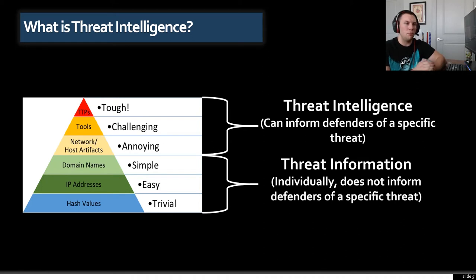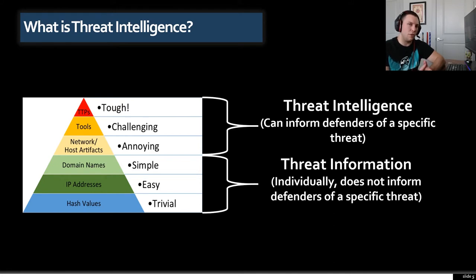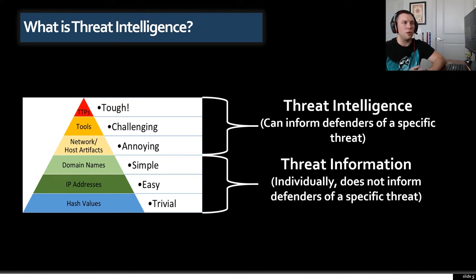If we look at this in terms of the pyramid of pain, most times when we're talking about threat intelligence we're talking about the lower three tiers. I'm not saying threat information is not useful or important — it is. I'm just trying to show that there is a very clear line between threat information and threat intelligence. Threat information individually doesn't inform defenders of anything specific. Once you start adding context, enriching that data, and connecting information together, then you start getting into the threat intelligence space and can inform your defenders of something specific.